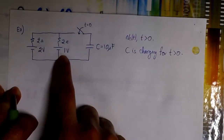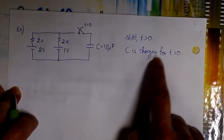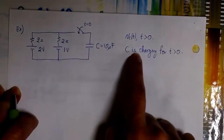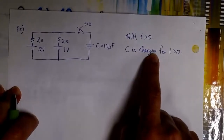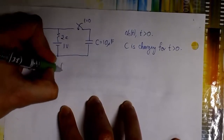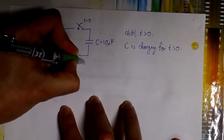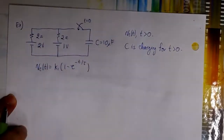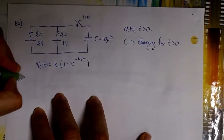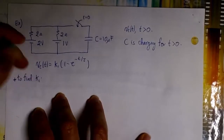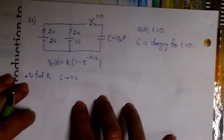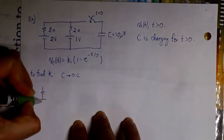Let's say we have two sources. We close the switch at t equals 0, so the capacitor starts charging at t equals 0. We're going to have a current flowing there that is charging the capacitor, and we want to find the voltage when the capacitor is charging. We know the equation we have to use is k1 times (1 minus e to the minus t over tau), and we have to find k1 and tau. To find k1, the procedure is exactly the same as before — we assume the capacitor has already reached steady state, replace it with an open circuit, and find the voltage between its terminals.